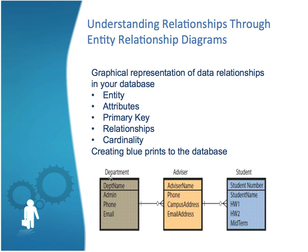In this example here, you see a department, advisor, and student, with what's called a crow's foot notation below. This diagram shows a one-to-many relationship: one department has many advisors, each advisor may have many students, but many students will only have one advisor. Those things are tied together on primary keys, or there may be complex keys. You have to have this structure to tie tables together and gather the information you need.